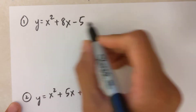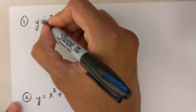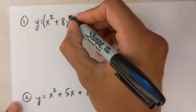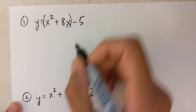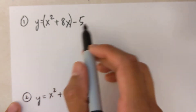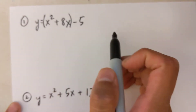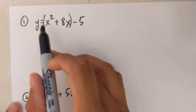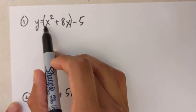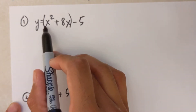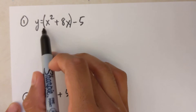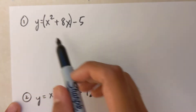The first step is to put a bracket around the first two terms — the x-squared and the x term — and then leave the constant outside. Next you want to factor out any a value, but since there's no a value in this problem we're going to skip that second step for this slightly easier problem.